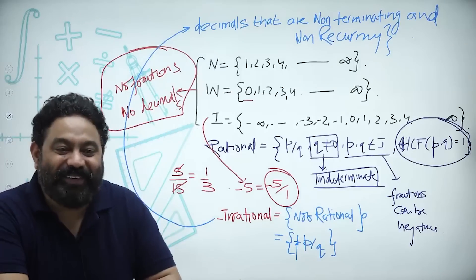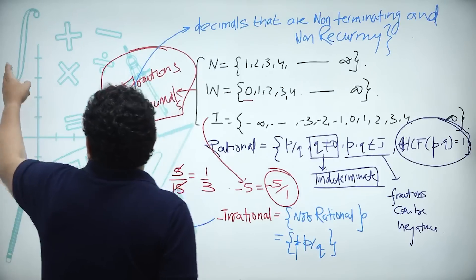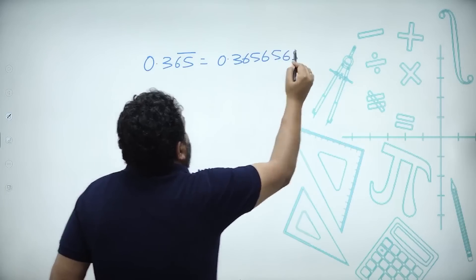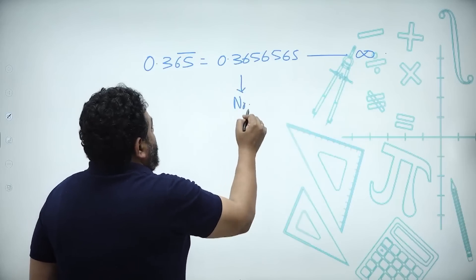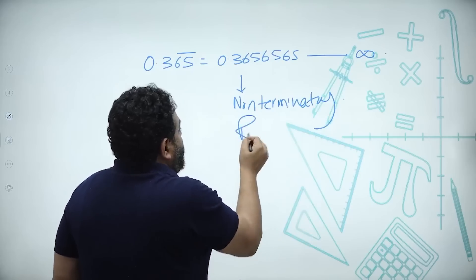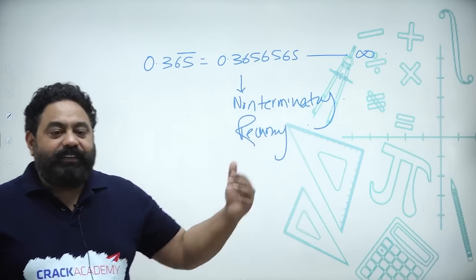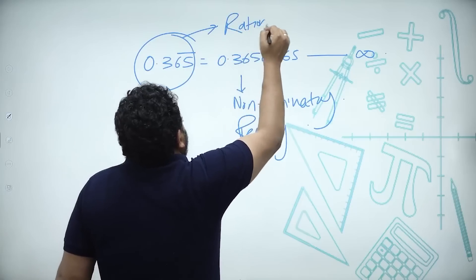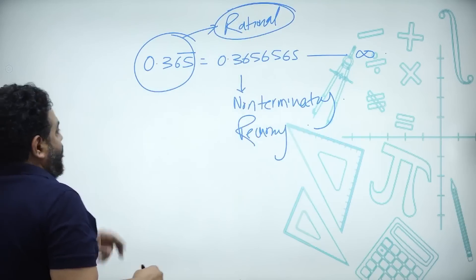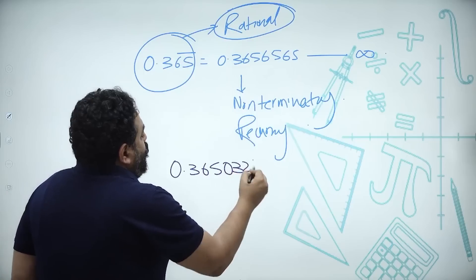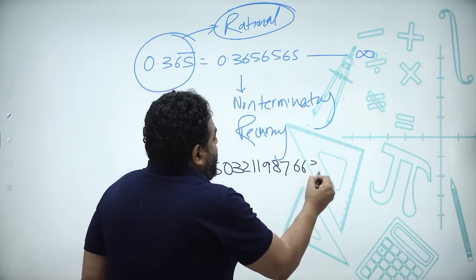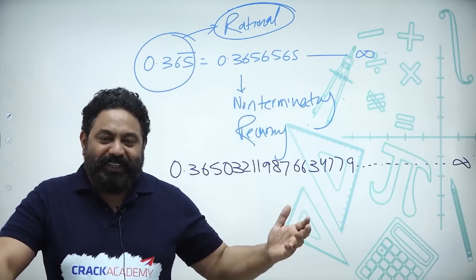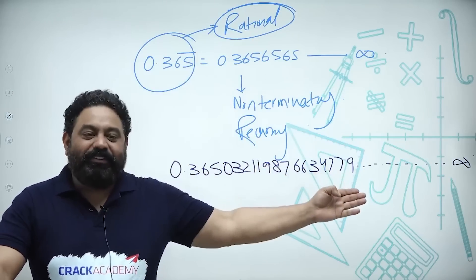For example, 0.3̄65̄ means 0.3656565... till infinity — this is non-terminating, but it is recurring because 65 is being repeated again and again. So this is not an irrational number — it is rational. Any number with a recurring bar is a rational number. An irrational number looks like 0.650321197987663479... going on and on with no regular pattern of recurrence.